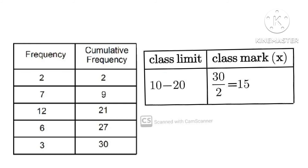Class width is the same thing as class length — that is, the difference between class limits or the difference between class boundaries. For example, 20 minus 10 equals 10. That 10 is called the class width, and it is also called the class length.